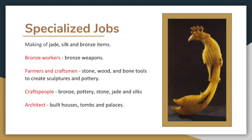Craftspeople worked with bronze, pottery, stone, jade, and silks to create a better city. Architects built Shang houses from mud with a thin wood framework. They also designed tombs and polished them.